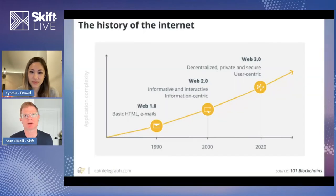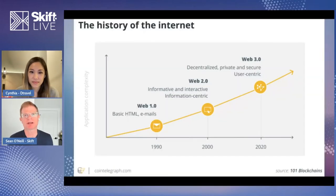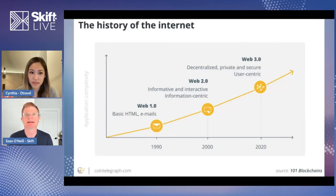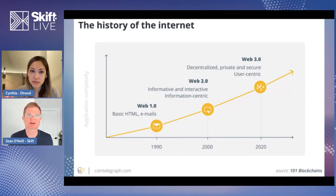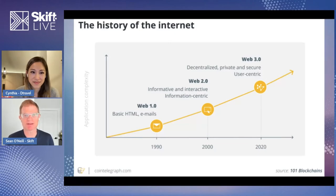Then we got to Web 2.0, which is where we are now, where major companies like Booking.com, Google, Facebook, and Expedia organize the world's information for us. They help users interact online, and they also build some walls around data in the process. Today we're going to talk about Web3, which is the next generation of the internet.